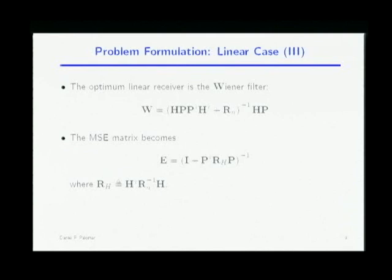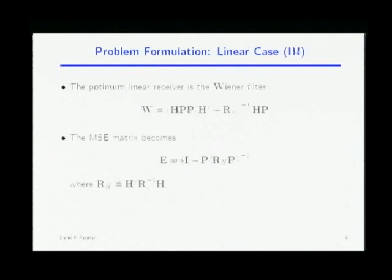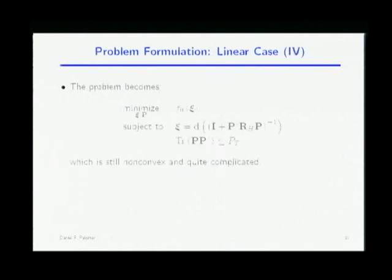R_N is the covariance matrix of the noise; if the noise is white, it's the identity. Now, having the optimal receiver, I can rewrite the original problem: minimize an arbitrary function of the mean square errors, where those errors equal the diagonal elements of the concentrated MSE matrix, subject to the power constraint. I now only optimize with respect to P.